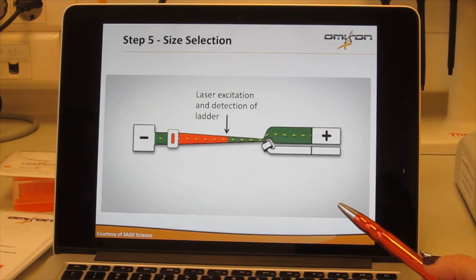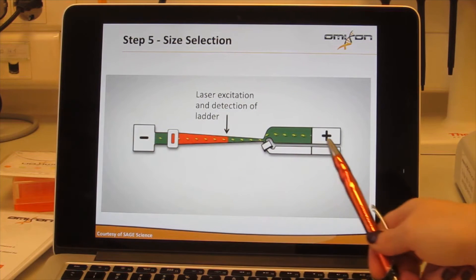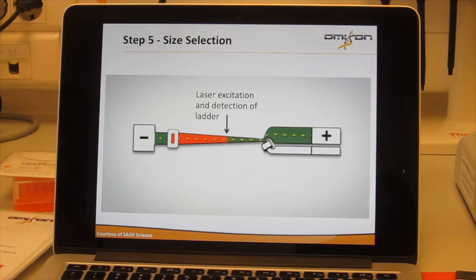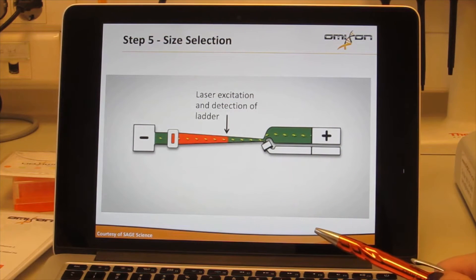As in any typical electrophoresis, the library, which is essentially DNA, will start migrating from the negative to the positive. One important thing to note here is that the positive electrode only from one branch—the top branch where the agarose gel is—is turned on.